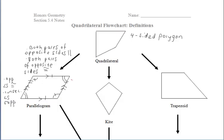I'll highlight one pair of consecutive angles in red — these two angles are next to each other. Following the diagram clockwise or counterclockwise, we get other consecutive angle pairs as well. Those two angles would add up to 180 degrees, and those two angles there are supplementary as well.